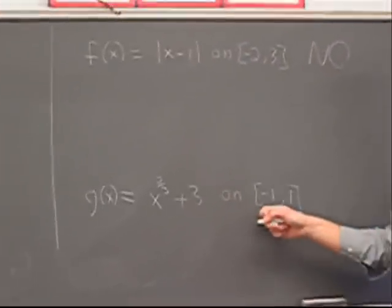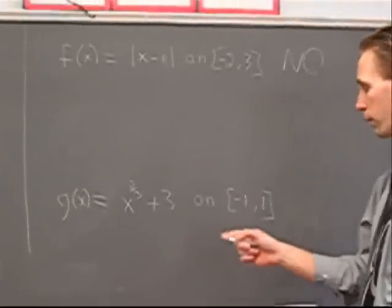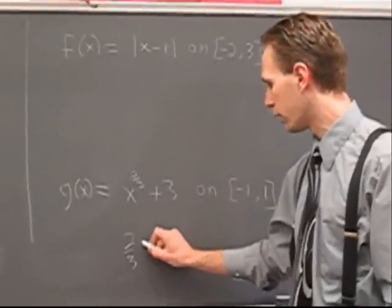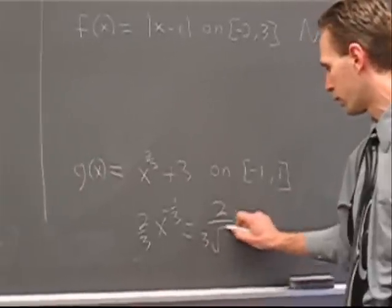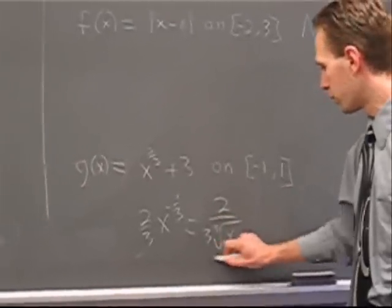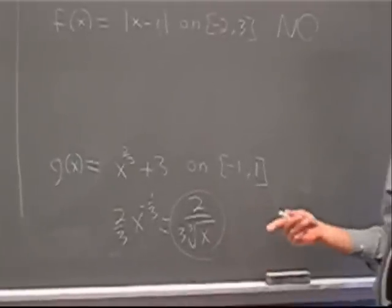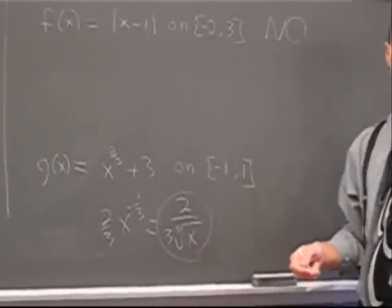What about this thing here? Is it a continuous function on minus one, one? Sure. Two-thirds power, that's no problem. However, the derivative of this function, two-thirds, x to the minus one-third, or two over three cube root of x, which fails to exist at zero. So the derivative is undefined at a point inside this interval, and hence the theorem does not apply.